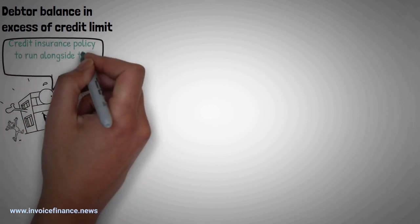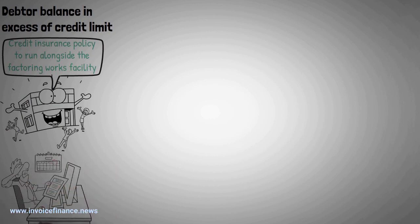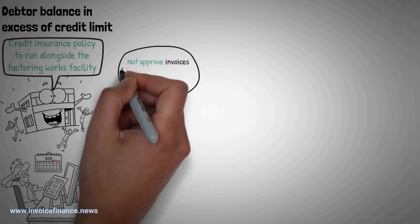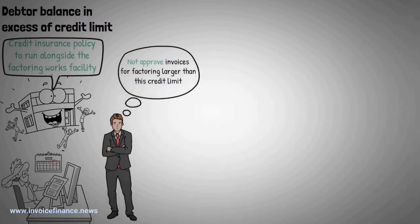Debtor balance in excess of credit limit. A company will often take out a credit insurance policy to run alongside the factoring works facility. This policy will set a limit to how much will be paid back to the company if the debtor defaults. An invoice financier will not approve invoices for factoring larger than this credit limit.